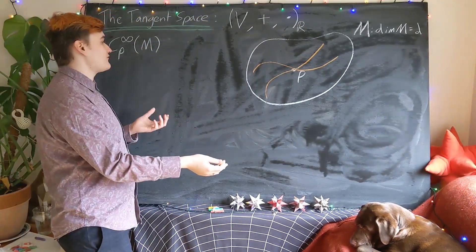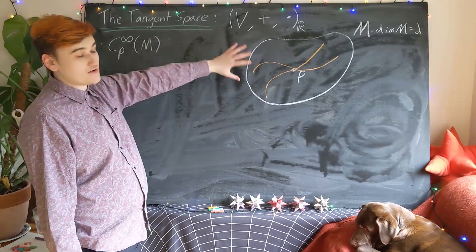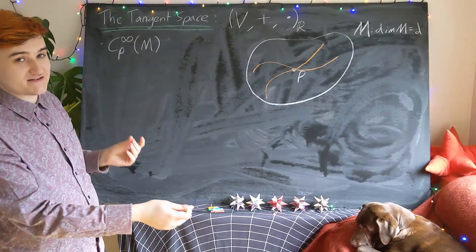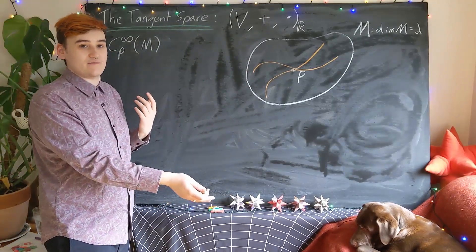So what we're looking for now is essentially a set of objects on our manifold that behaves like a vector space, or the objects can be added and scalar multiplied just as we can with vectors.